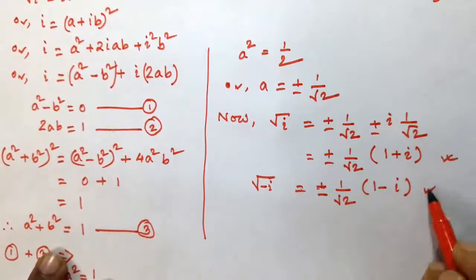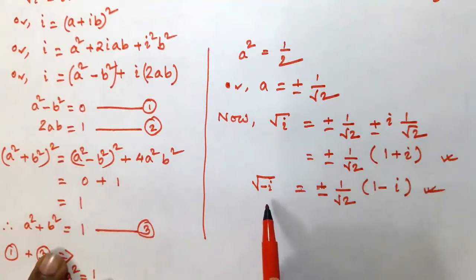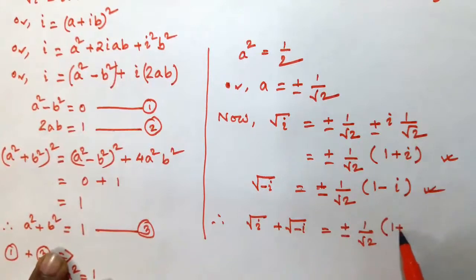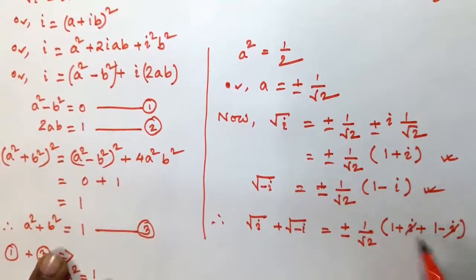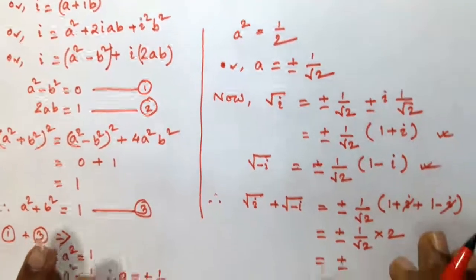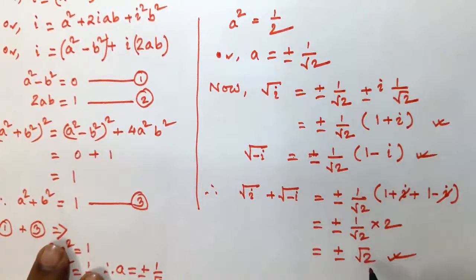Adding these two conditions, we shall find the value of root i plus root minus i. Therefore, root i plus root minus i is equal to plus or minus 1 by root 2 into (1 plus i plus 1 minus i). Canceling the i's, we find this is plus or minus 1 by root 2 into 2, which equals plus or minus root 2. So, root i plus root minus i equals plus or minus root 2.